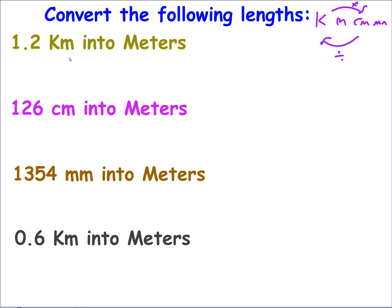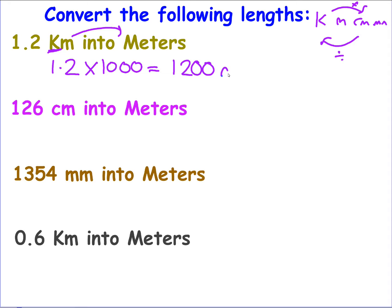If I'm converting kilometres into metres, I'm going from big to small. So I take my 1.2 and multiply it. I know a kilometre is a long distance and a metre is around waist height. Kilo means a thousand, so I multiply by 1000 to get 1200 metres.